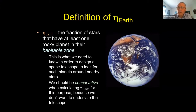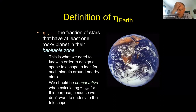That leads to the definition of a parameter astronomers are familiar with: eta-Earth, which is the fraction of stars that have at least one rocky planet in their habitable zone. That's what astronomers need to know to design space telescopes to look for such planets around nearby stars. We should be conservative when calculating eta-Earth for this purpose, because we don't want to undersize our space telescopes.